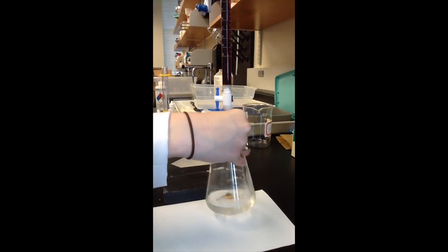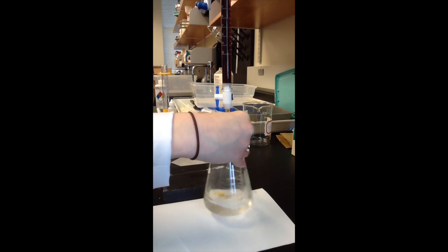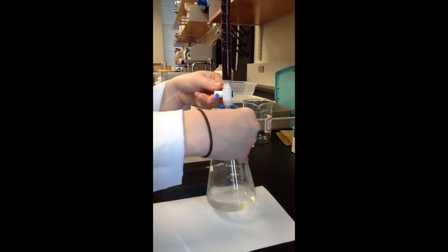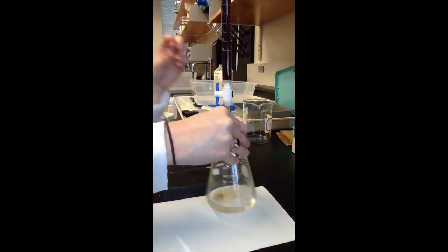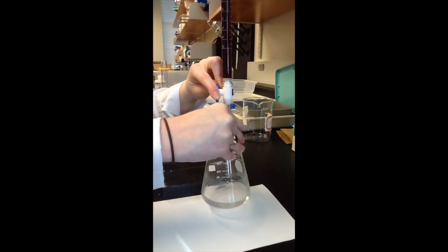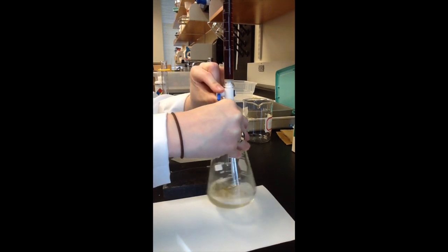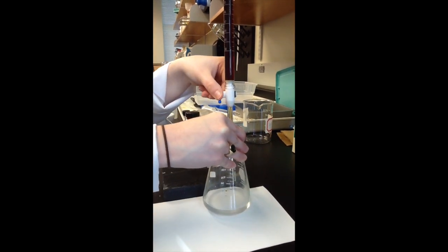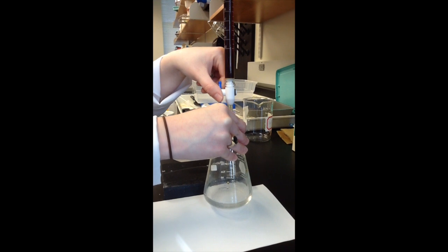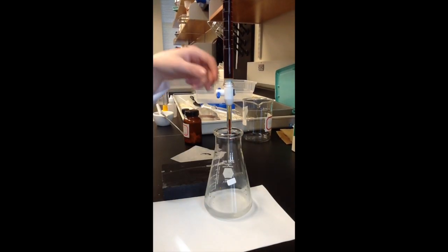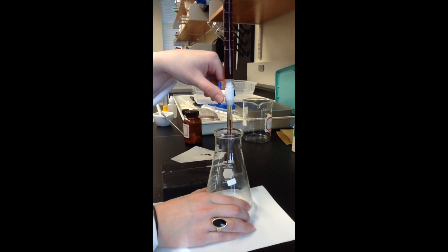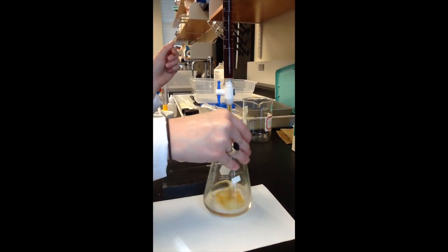Slowly turn the stopcock until the iodine begins to drip out. While the iodine is dripping into the flask, swirl the flask to mix the solution. Do this until you see a permanent color change. When you see a color change, close the stopcock and record the final volume of the burette. Repeat this titration two more times, filling the burette back up with iodine each time and recording the initial and final volumes.